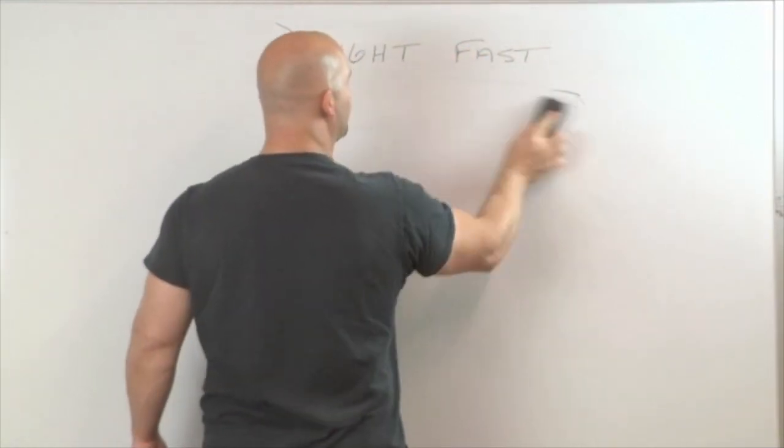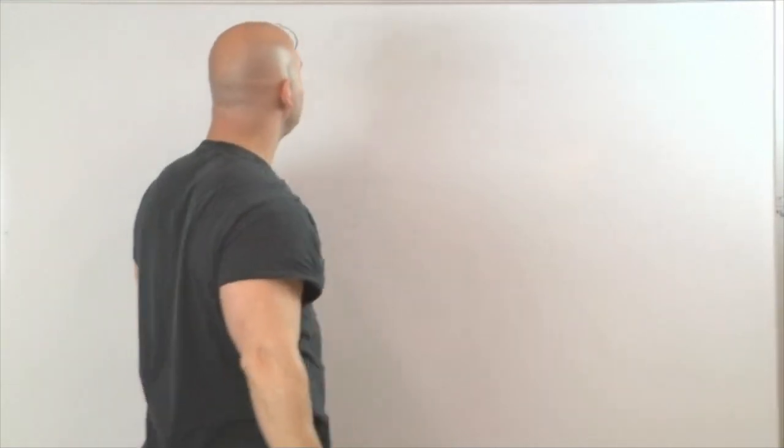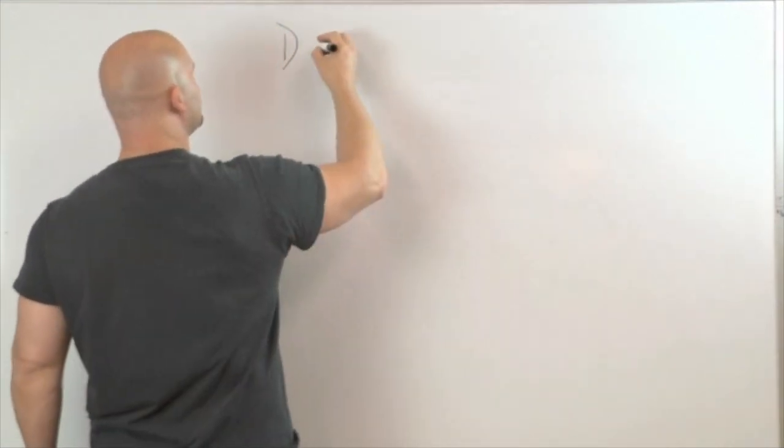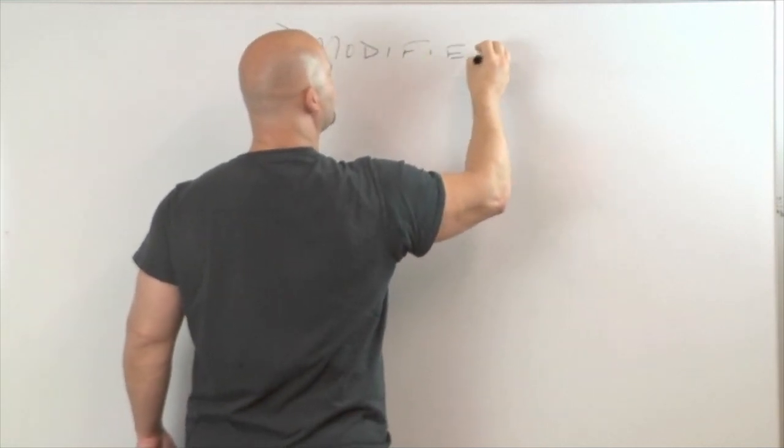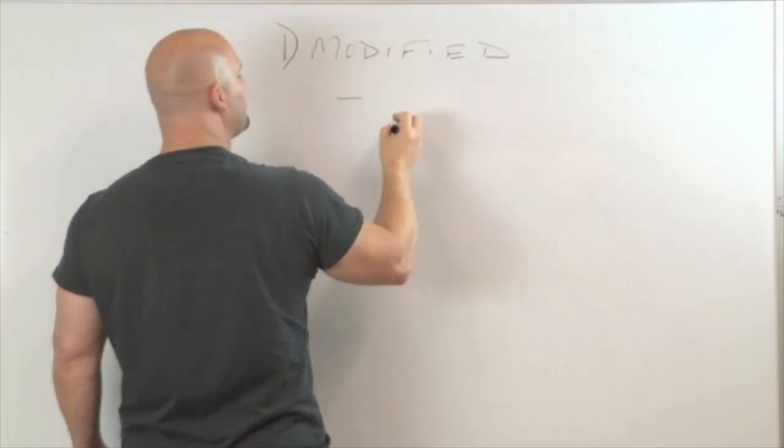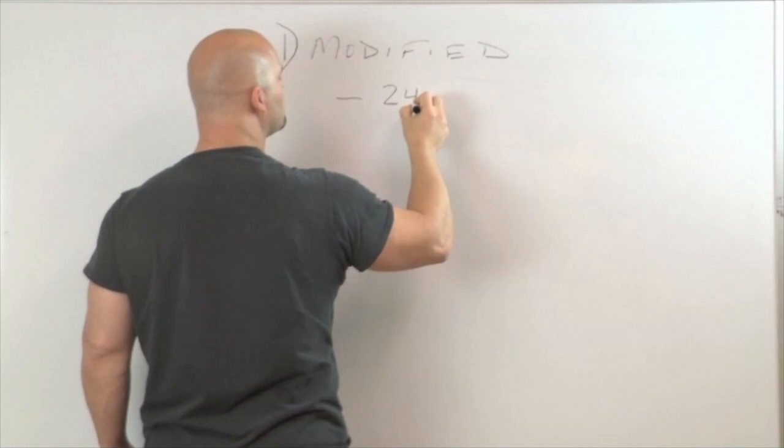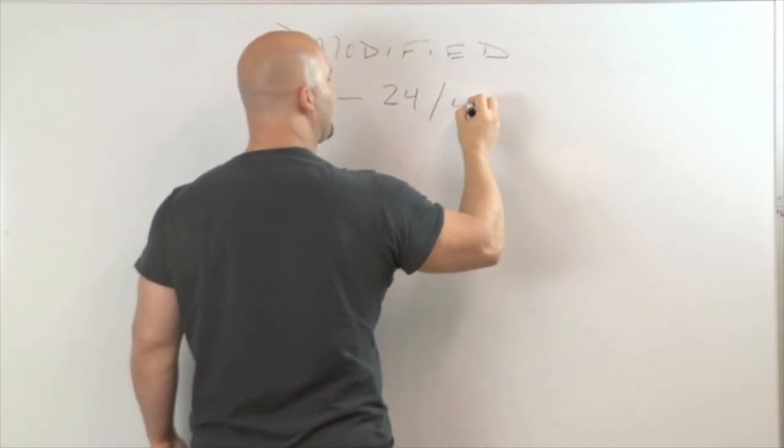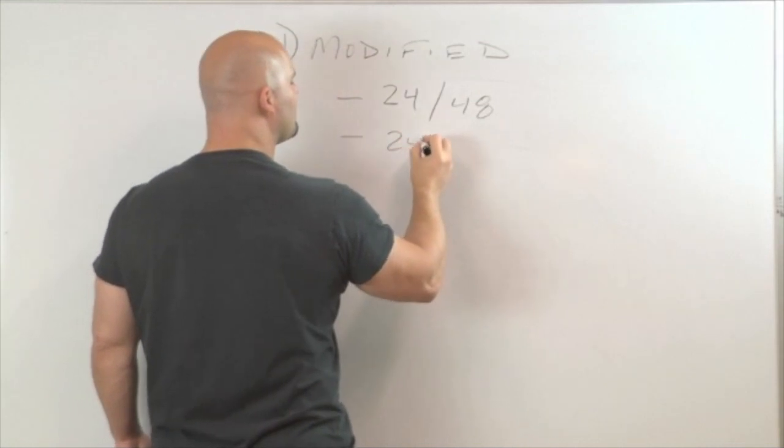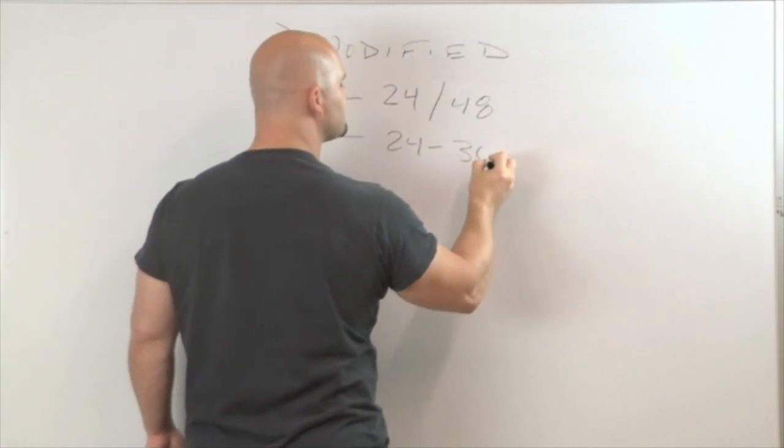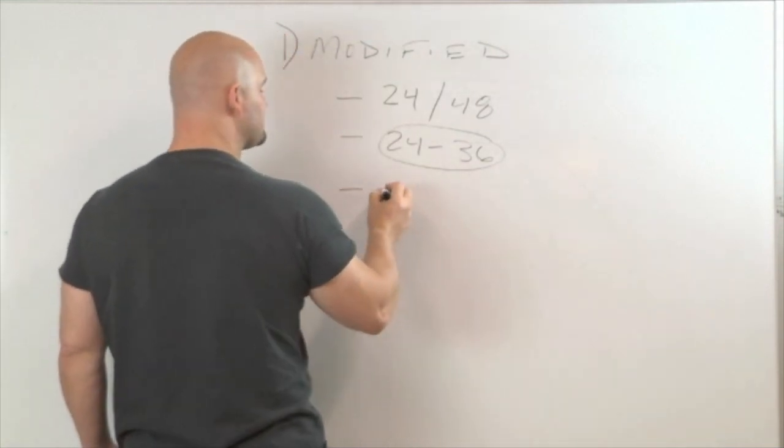Now, the second type of fast is a fast that we call the modified fast. And basically what this is is a longer fast. And it can last anywhere from 24 to 48 hours. And normally it's going to be between 24 to 36 hours, a day to a day and a half.